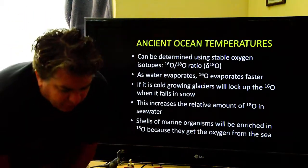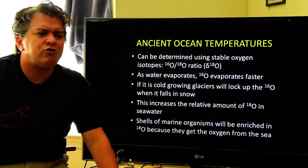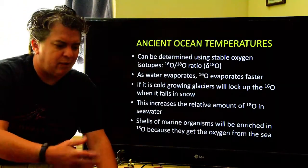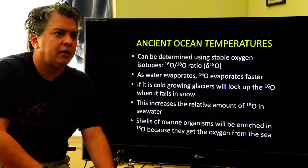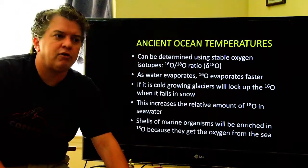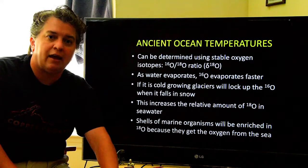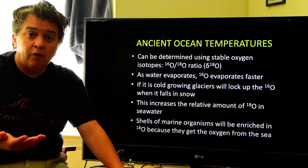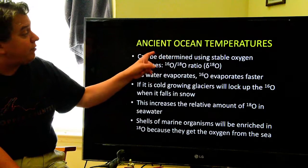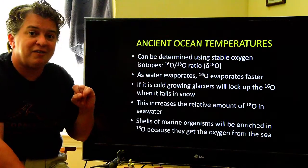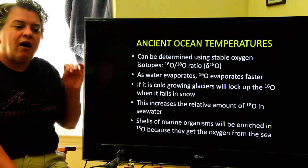How do we figure out, with any kind of accuracy, ancient ocean temperatures or ancient temperatures in general? Because later on in this semester, I'll be telling you that in the Cretaceous it was a greenhouse world, significantly warmer than today. How do I know these kinds of things? One of the ways we can figure out ocean temperatures of the distant past are oxygen isotopes.